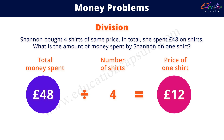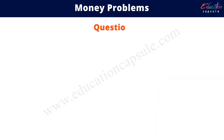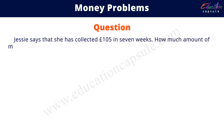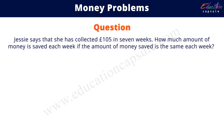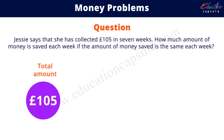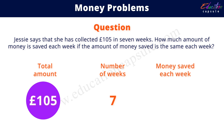Now let's try a question. JC says she has collected 105 pounds in seven weeks. How much money is saved each week, if the same amount is saved each week? The total amount is 105 pounds and the number of weeks is 7. The amount saved each week would be 105 divided by 7, which equals 15 pounds.